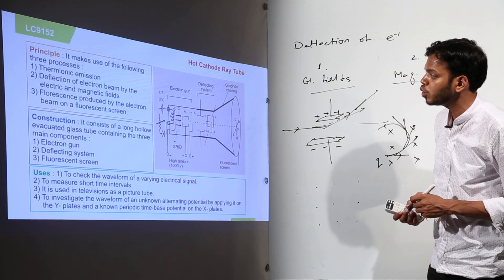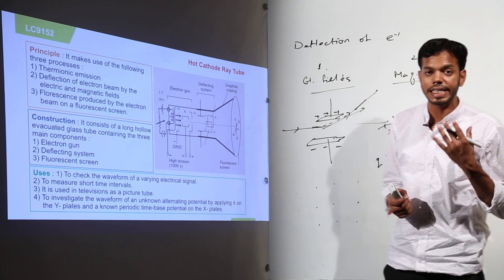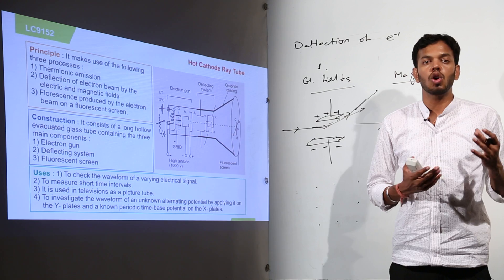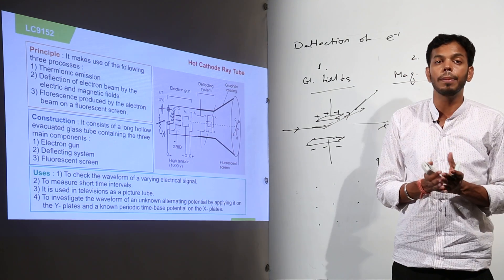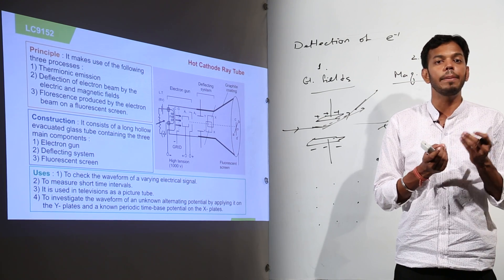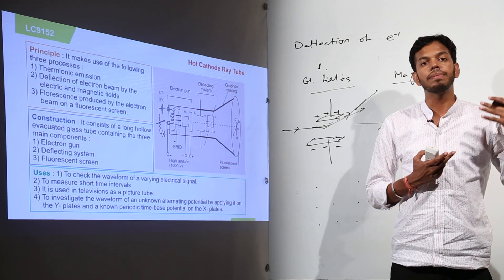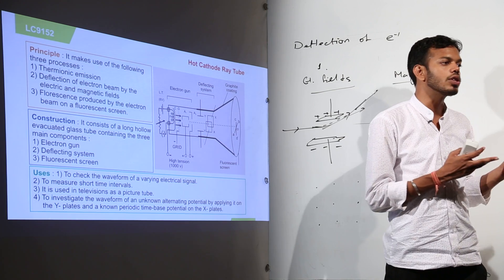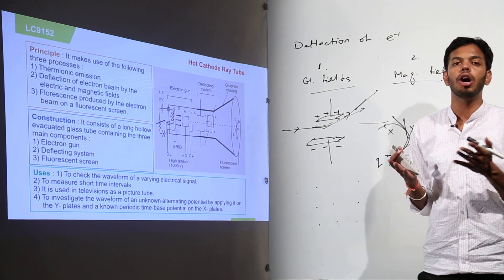Now the third one is fluorescence produced by the electron beam on a fluorescence screen. Now what is fluorescence? Some materials which are called fluorescence materials exhibit a property or phenomena called fluorescence that is they emit light when something strikes on it or some particles strike on it.